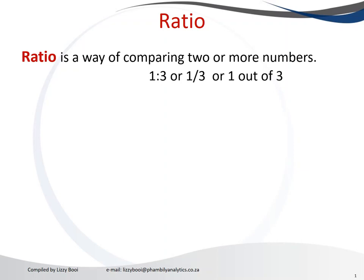We can write it as follows. 1 is to 3 using the double colon, meaning for every 1 number there are 3 numbers, so we are comparing two numbers. 1 is to 3, or we can write it as a fraction as 1 over 3, or we can denote it as one out of three.